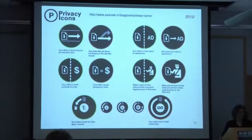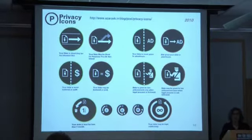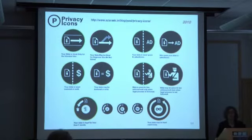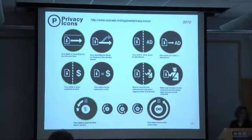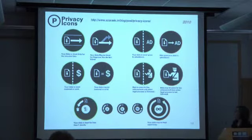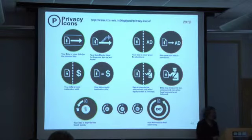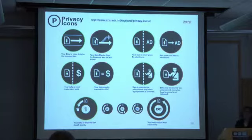Privacy icons have been a dream of a lot of people for a while — let's not have to read these policies, let's just boil it down to some icons. Whether it's reported by the companies or we crowdsource them. There have been a number of efforts to create privacy icons. This one came from Mozilla a couple of years ago. Privacy icons are really difficult because privacy is not a concept that lends itself well to visualization. None of these have really gone anywhere yet. This particular set was heralded with some fanfare, but looking at one icon that means 'data is given to law enforcement only when legal process is followed,' you show it to people and they have no idea what it means — it's not at all obvious.